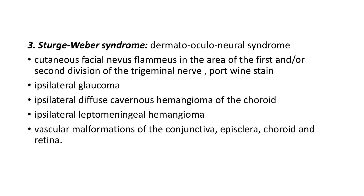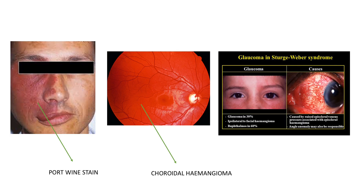Sturge-Weber syndrome is a dermato-ocular-neural syndrome, so you see conditions affecting the skin, the eye, and the brain. In this picture you see a port wine stain, a typical nevus on one side of the face. In the second picture you see a choroidal hemangioma — the retina appears completely red because of the underlying reflex from the hemangioma. The third picture shows a girl with glaucoma, affecting only one eye.